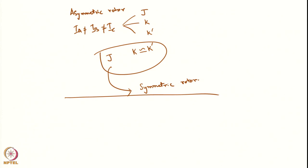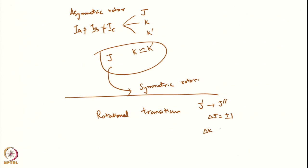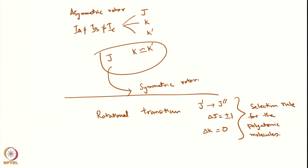One thing you must remember: rotational transitions are generally described by J to J′ or J′ to J″ with the selection rule ΔJ = ±1 and ΔK = 0. This is the selection rule for polyatomic molecules.